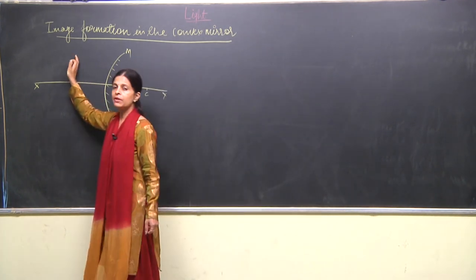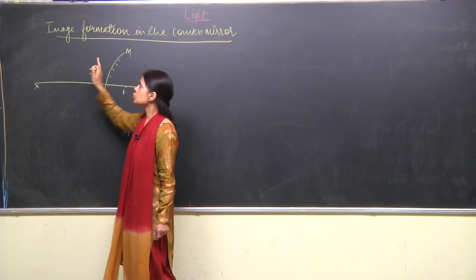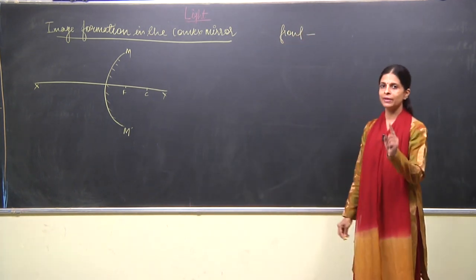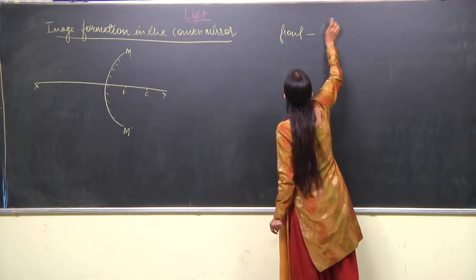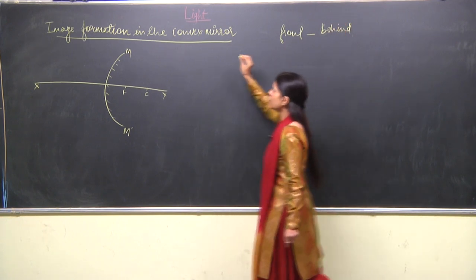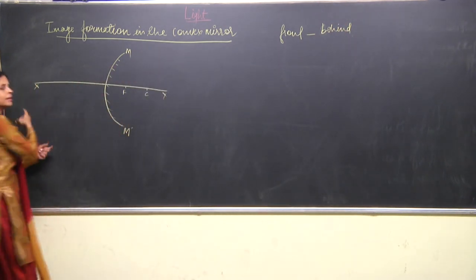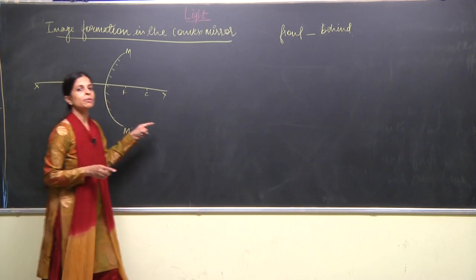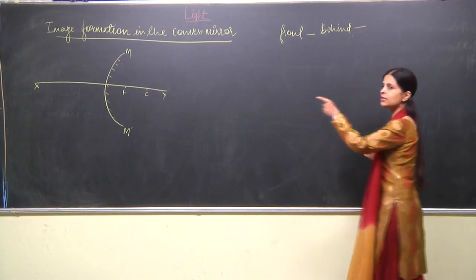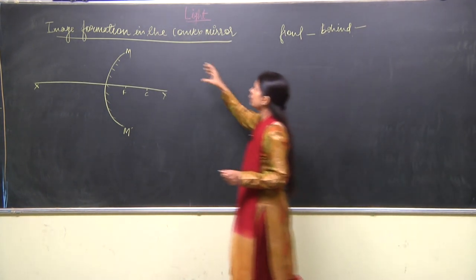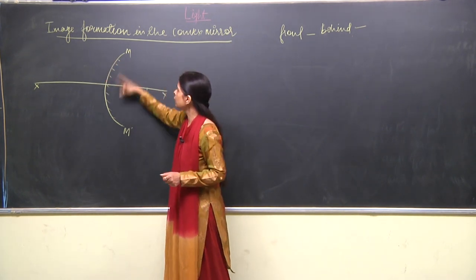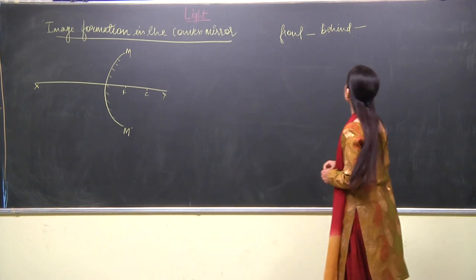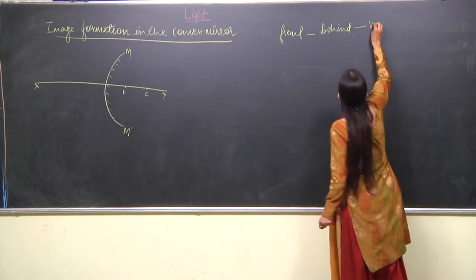Whenever the object is kept in the front part, the image formation will always take place behind the mirror. Whenever the image formation is taking place behind the mirror, this is not a real image because the reflected rays cannot pass through the polished surface. So whatever rays we are drawing over here are virtual rays, and virtual images will be formed.